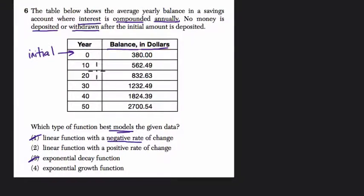Negative rate of change would mean something like, as the years are going up, the balance is going down. However, as the years are going on and up, the balance is going up. So it's a positive rate of change.